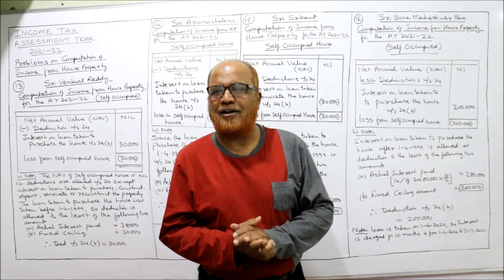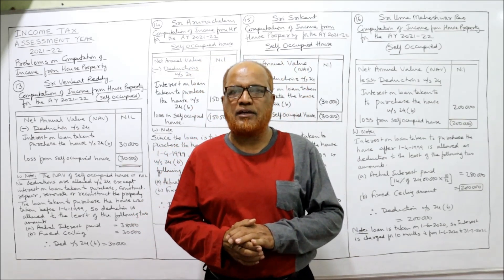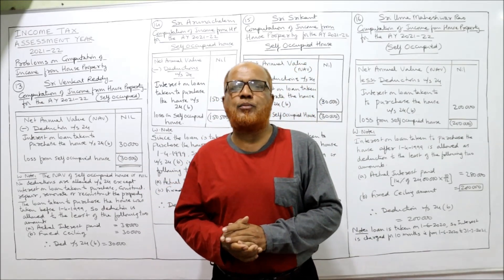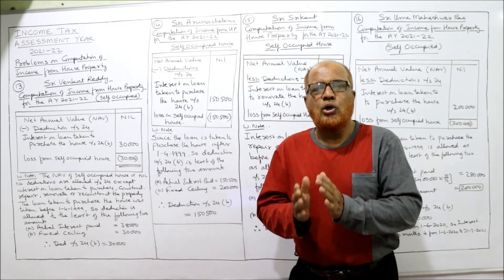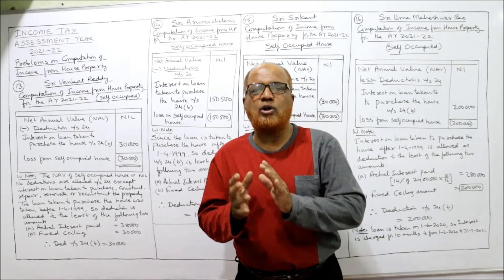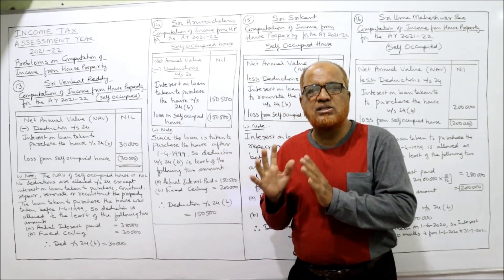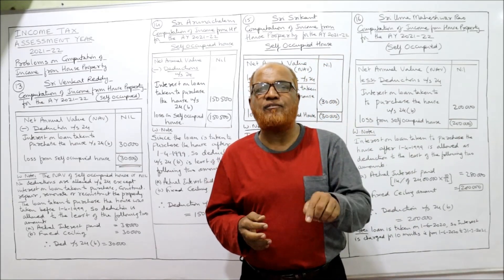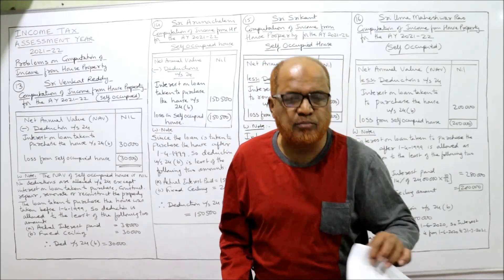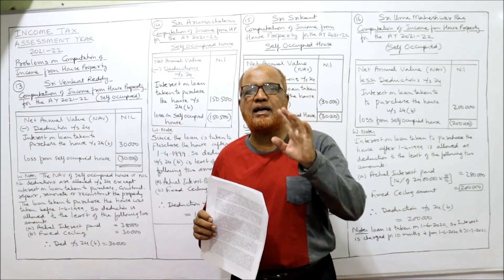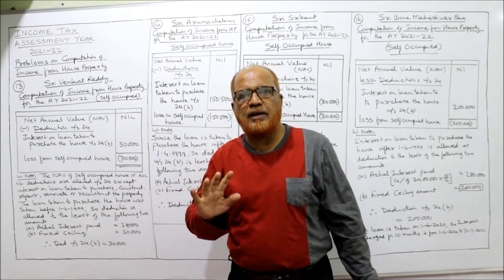Hello viewers, welcome to my channel. I'm Hashem Ali Khan. This is the last and final video on the problems of computation of income from house property. Already in the previous videos I have completed 12 problems. Two types of houses are there: let out house and self-occupied house. In this last video I'm going to explain four problems on self-occupied house. Please keep a printout of the problems from the link in my description.